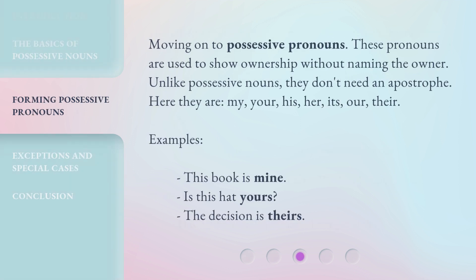Moving on to possessive pronouns. These pronouns are used to show ownership without naming the owner. Unlike possessive nouns, they don't need an apostrophe. Here they are: my, your, his, her, its, our, their. Examples: This book is mine. Is this hat yours? The decision is theirs.